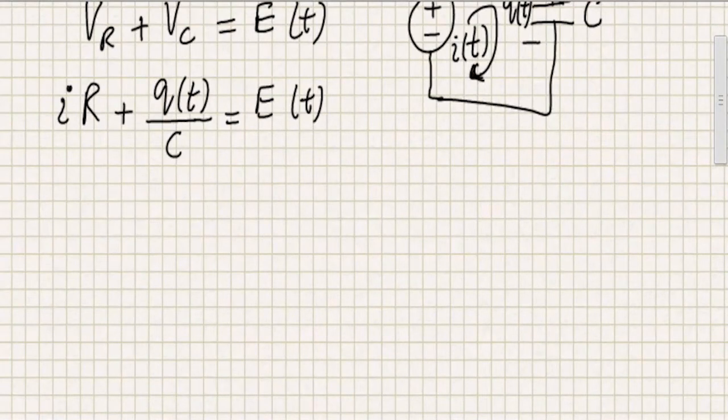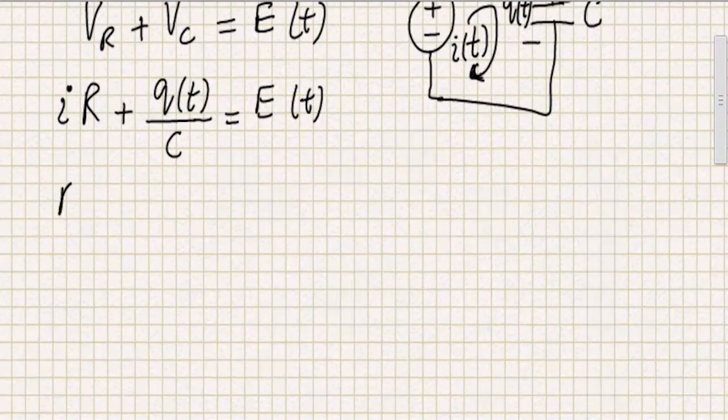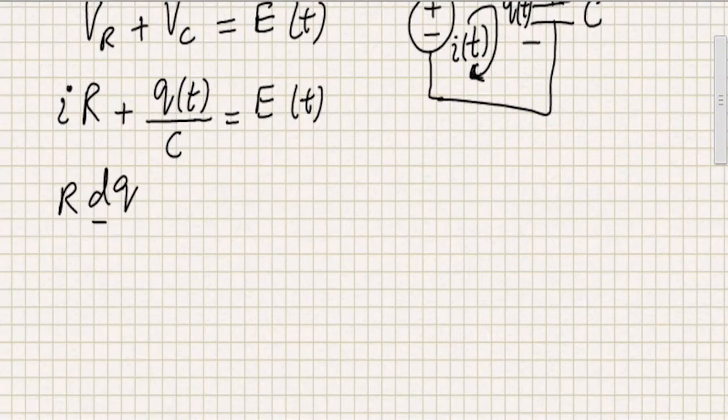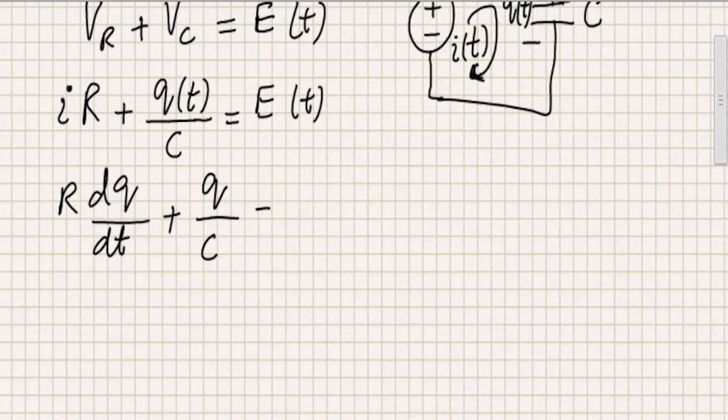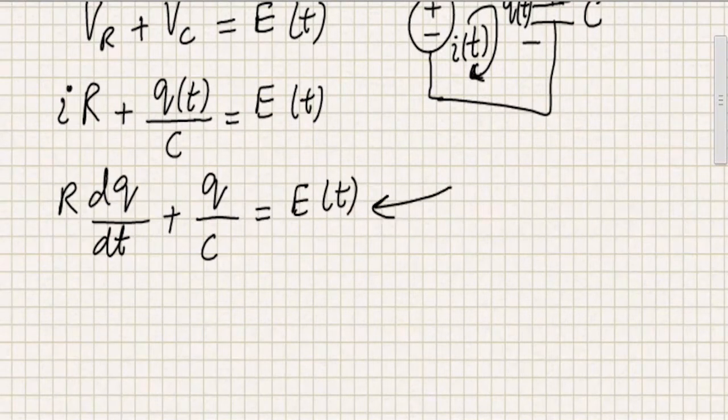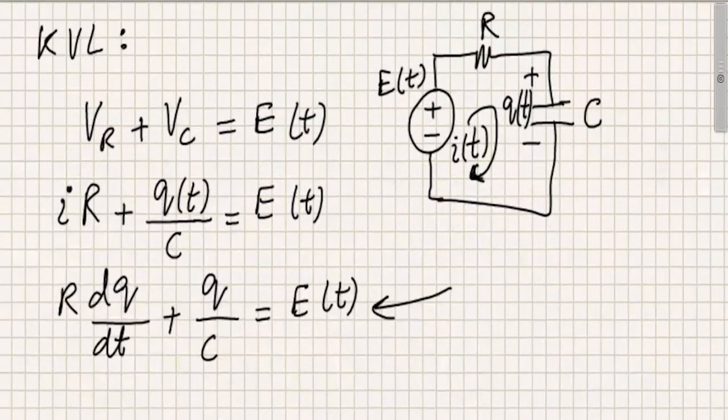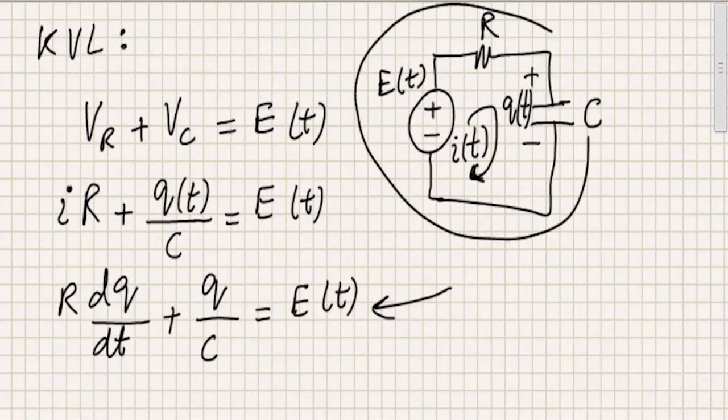I can be translated using dQ by dt. So I'm going to write R dQ by dt and this Q is also a function of time, but for the sake of brevity, I'm using only Q. And here I'm also going to write only Q equal to E of T. So this will be the differential equation, which we will be using to solve problems related to series RC circuit.